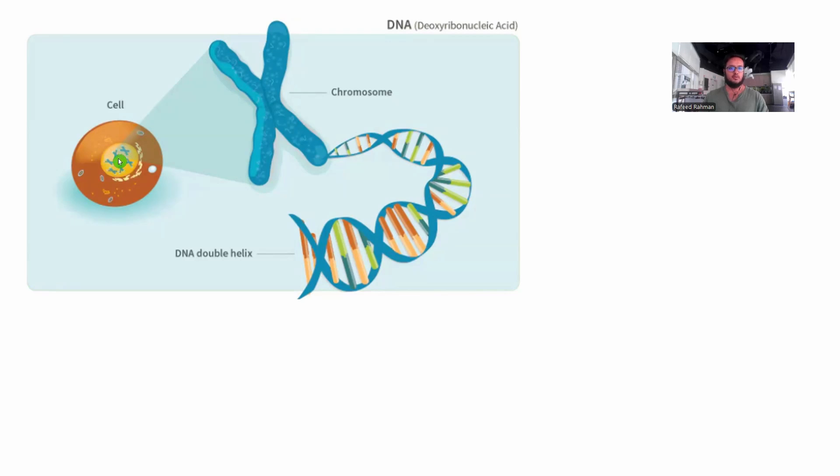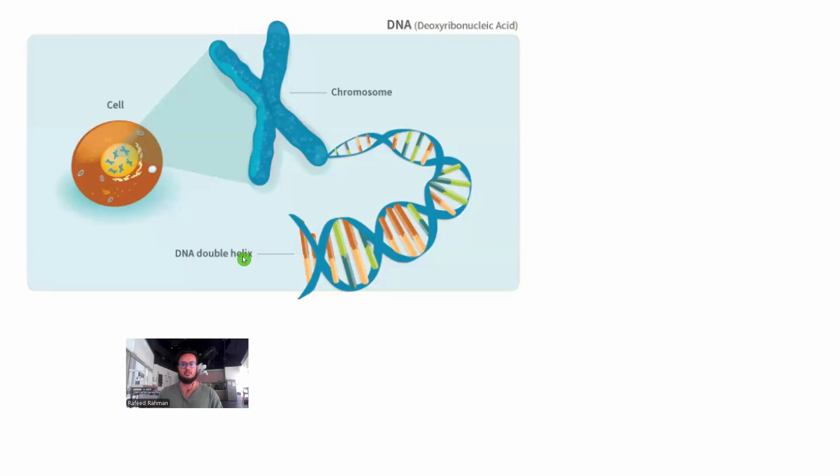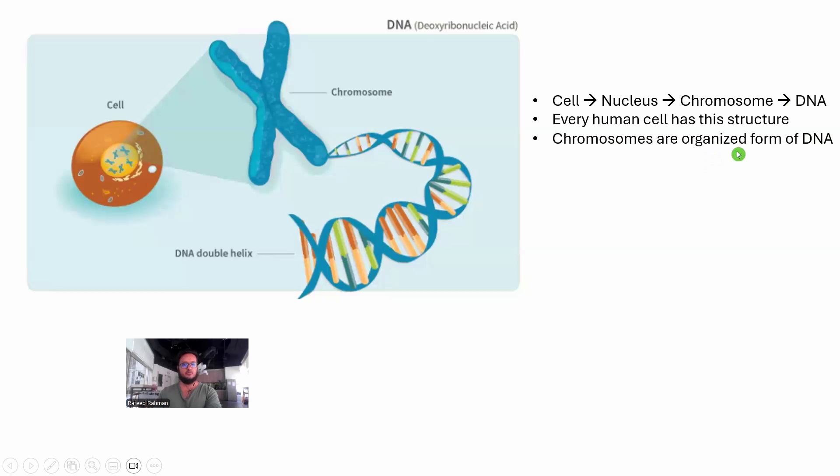Inside the nucleus, we have some chromosomes floating around. These cross marks are chromosomes. DNA is basically organized in the chromosome. Inside the chromosome, we have this DNA organized and packed. So we have the cell, we have nucleus inside the cell, we have chromosome inside nucleus and we have DNA nicely packed inside the chromosome. Every human cell has this structure and chromosomes are just organized form of DNA basically.